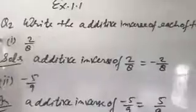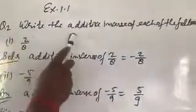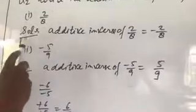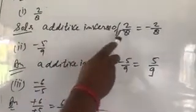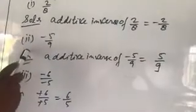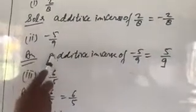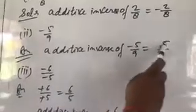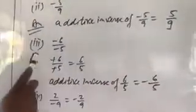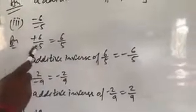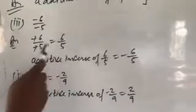Now Question Number 2: Write the additive inverse of each of the following. First part is 2 upon 8. Solution: additive inverse of 2 upon 8 equals minus 2 upon 8. Second part is minus 5 upon 9. Additive inverse of minus 5 upon 9 equals plus 5 upon 9. Third part is minus 6 upon minus 5. The negatives cancel out, equal to 6 upon 5.